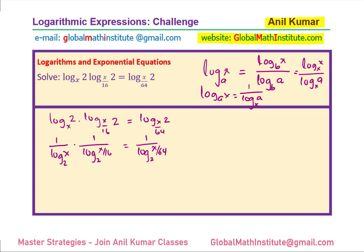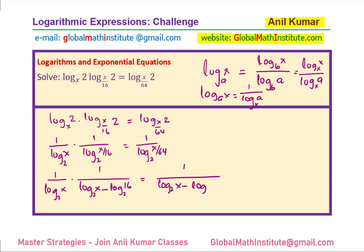Now we can expand this. We have 1 over log base 2 of x, times 1 over (log base 2 of x minus log base 2 of 16), equals 1 over (log base 2 of x minus log base 2 of 64). Here we have used the formula: log base a of (x/y) equals log base a of x minus log base a of y.